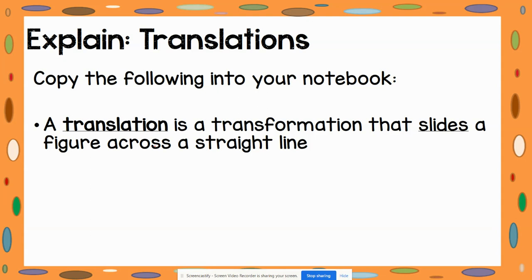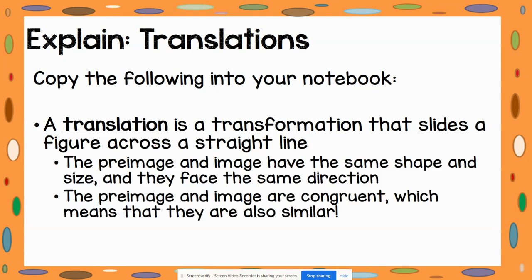A translation is a transformation that slides a figure across a straight line. The pre-image and image have the same shape and size and they face the same direction. The pre-image and image are congruent, and because they are congruent, that also means that they are similar.